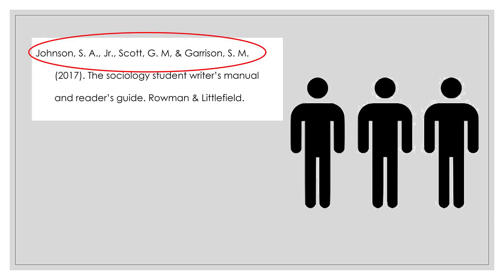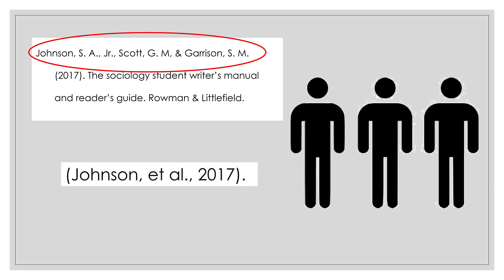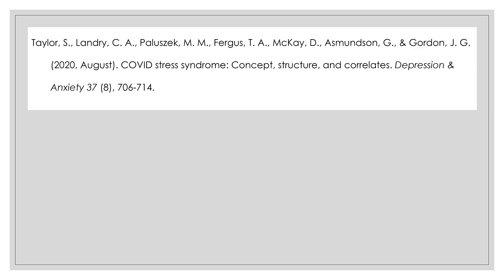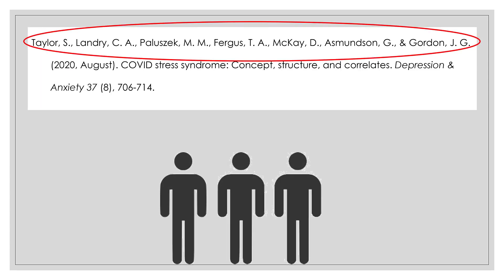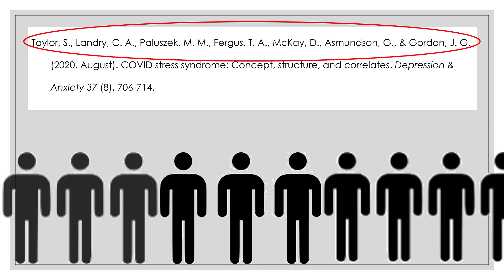Three authors? Even easier. All you need is the first one, et al., along with the date. What is et al.? It's an abbreviation for the Latin 'et alii,' meaning 'and others.' You do need that period, since 'al' is an abbreviation for 'alii.' No matter how many more authors you add to the full citation, et al. will cover it.